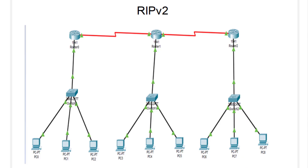Hello everyone, welcome to the Computers Network practical series. We will be doing the practical on RIP version 2. In the previous practical we did RIP version 1, and we are using the same topology. RIP version 2 is an enhancement over RIP 1. RIP 1 is applicable only for classful addressing, but RIP version 2 is applicable for classless addressing also.